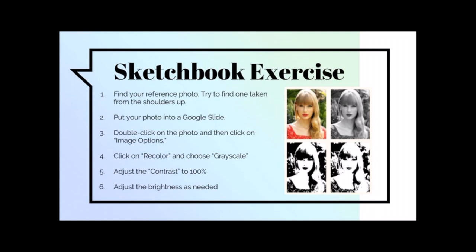First, find your reference photo — try to find one taken from the shoulders up and decent quality. Go ahead and put your photo into a Google Slide. After you do that, double click on the photo and click on image options. Then click on recolor and choose grayscale, which is the bottom middle option.